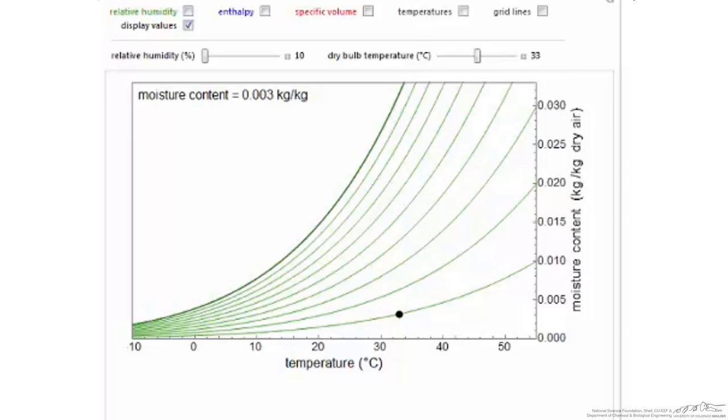This screencast illustrates navigation of a psychrometric chart and extraction of key information. There are seven pieces of information that can be extracted from a psychrometric chart. Given any two of these, the point on the chart is fixed and you can obtain the other five parameters.